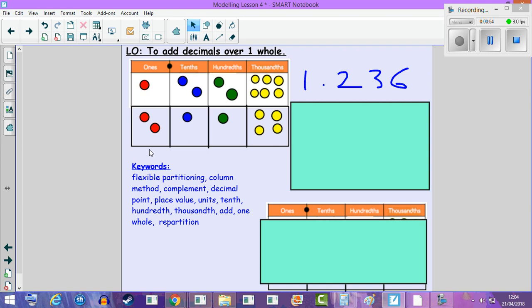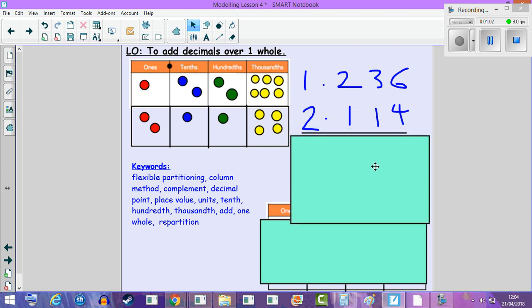Our second number is two ones, one tenth, one hundredth, four thousandths, so our number is 2.114. Then when we add them together...